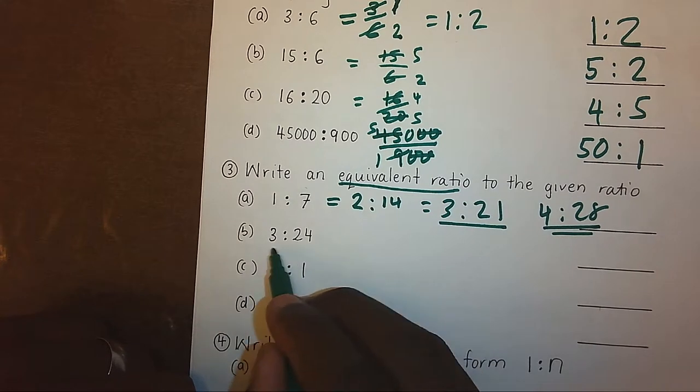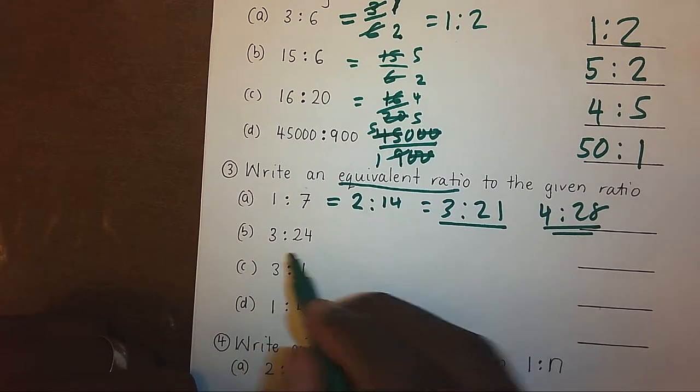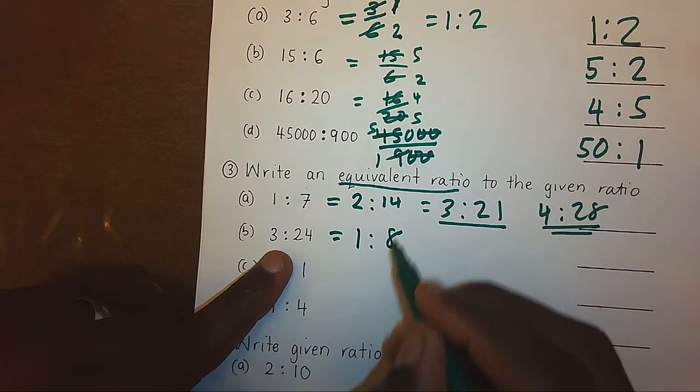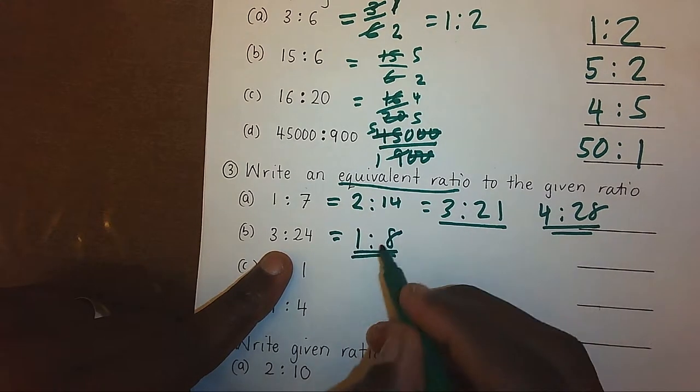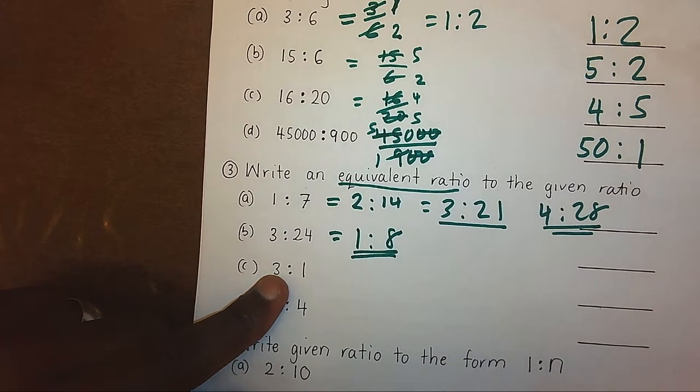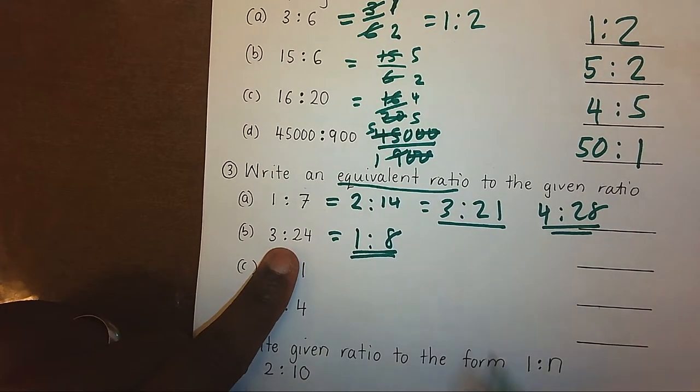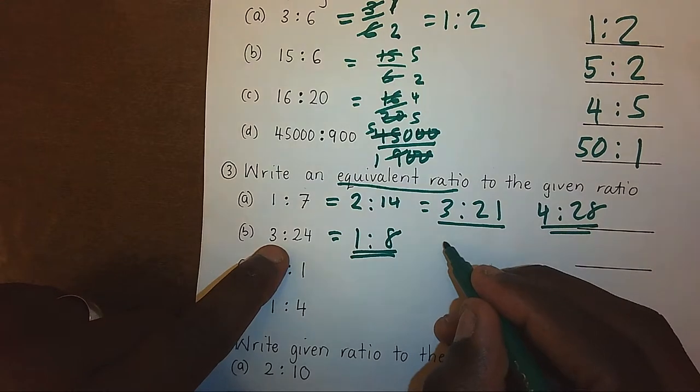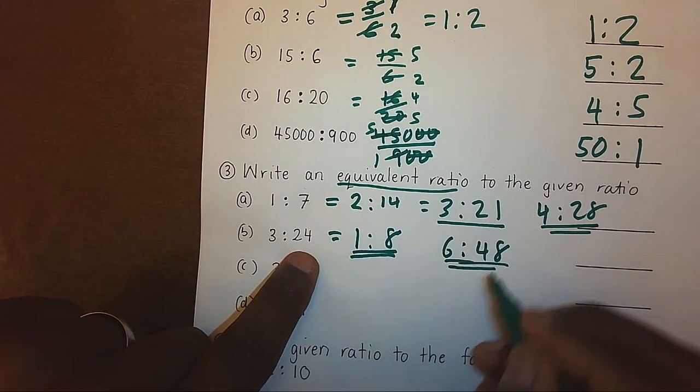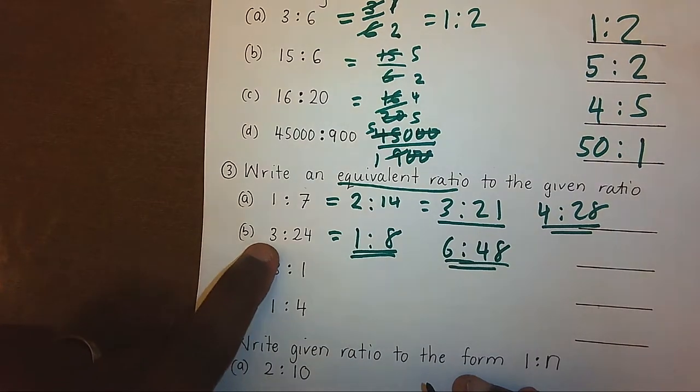When we look at 3 ratio 24, it's not the simplest. By simplifying it, we shall get 1 ratio 8. 1 ratio 8 is an equivalent of 3 ratio 24. If we double this, times 2, we get 6, times 2, we get 48. This is also another equivalent ratio.